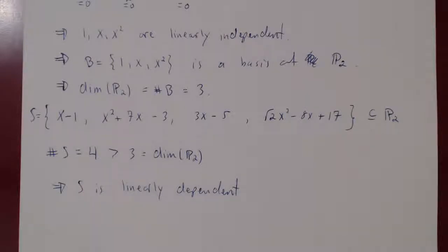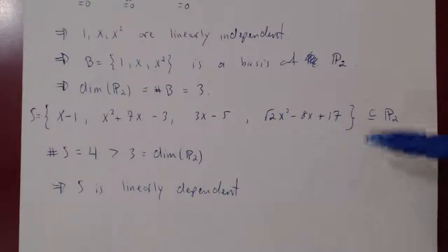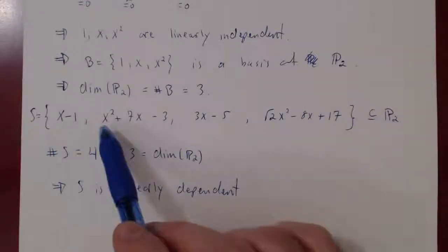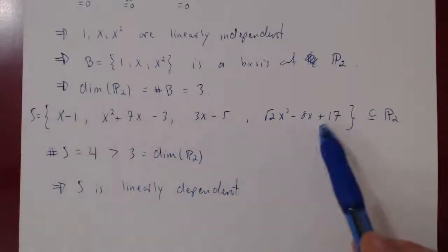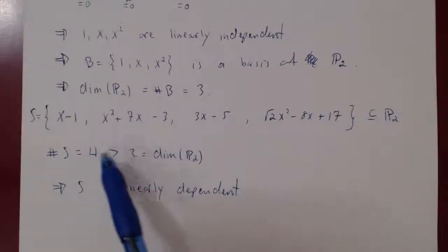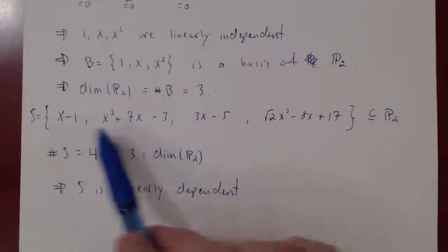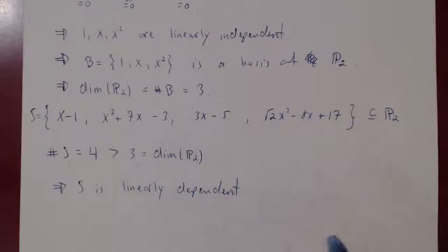No need to consider linear combinations of these four polynomials being equal to the zero vector and solving for the coefficients. Since we have four polynomials living in P2, which is a 3-dimensional vector space, and we have more vectors than dimensions, the set is automatically linearly dependent. This is what I call a dimension argument: if you ever have a vector space and a subset with more elements than the dimension, the elements are automatically linearly dependent.